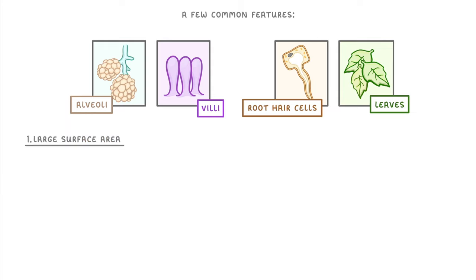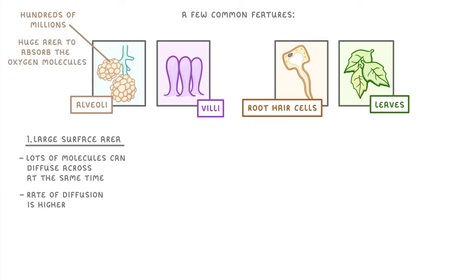The first is a large surface area. Having a really big surface area means that lots of molecules can diffuse across at the same time, so overall the rate of diffusion is higher. For example, by having hundreds of millions of alveoli, there's a huge area over which we can absorb the oxygen molecules that we need. This is also why villi have this long, thin shape, why leaves are large and flat, and why root hair cells have these long, thin projections.